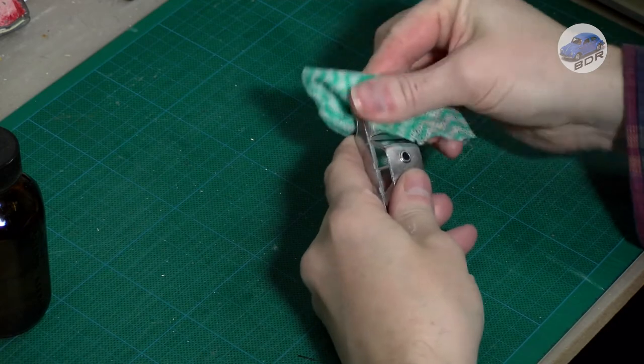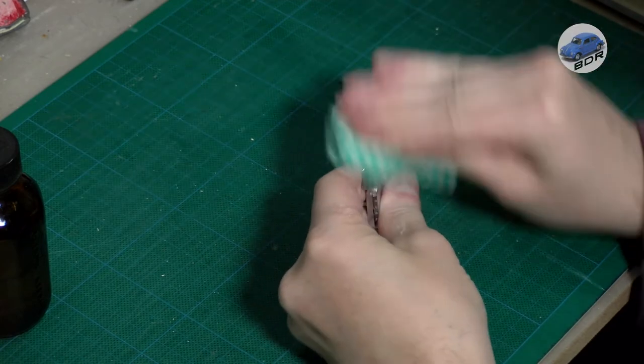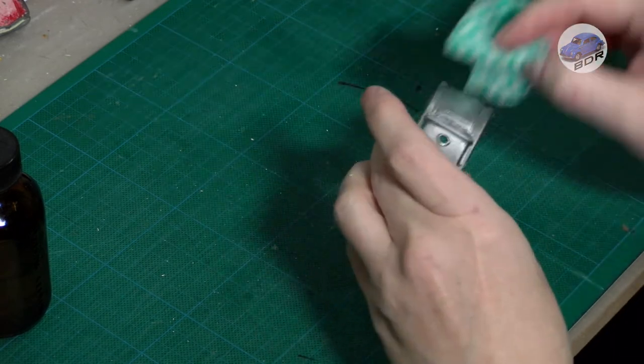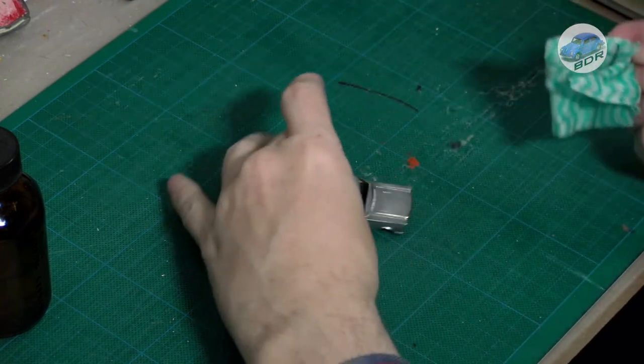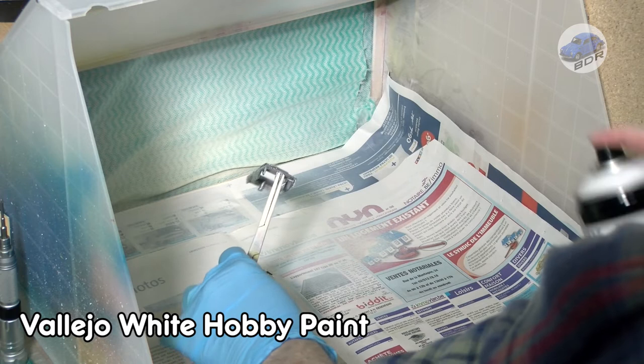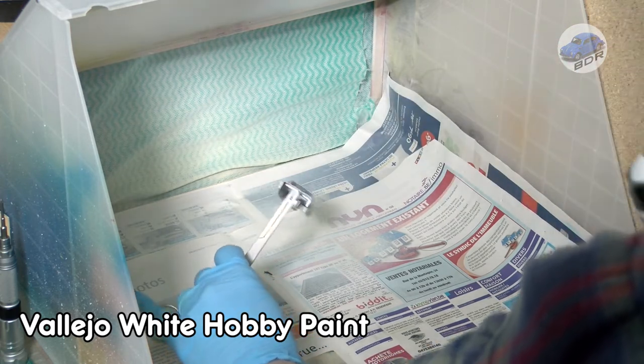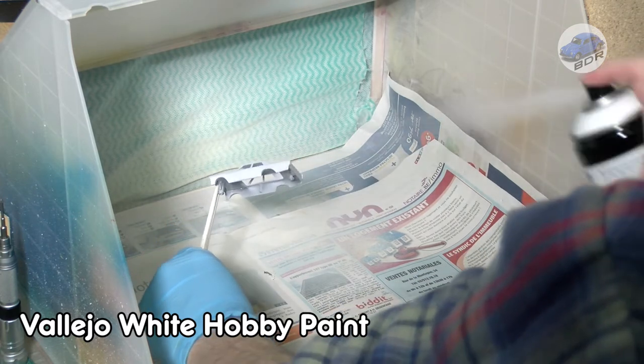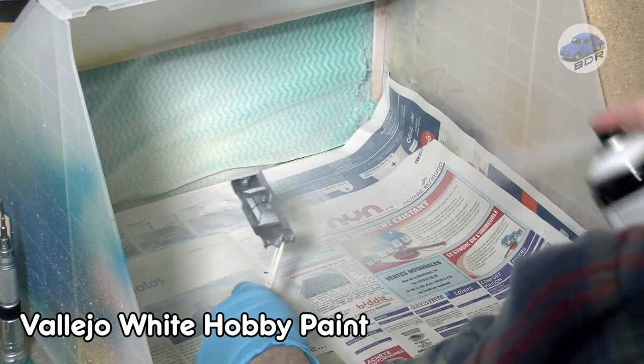I use isopropyl alcohol to remove any grease or dirt from the casting. Now we can start painting. I primed the model with white Vallejo hobby paint. These are spray cans that combine primer and a matte paint but they are also very suitable to use as a primer. These paints have a nice covering without losing any detailing.